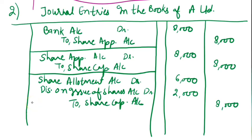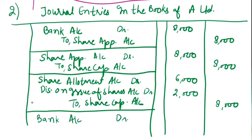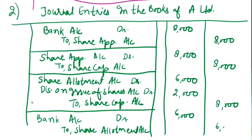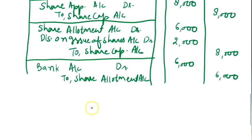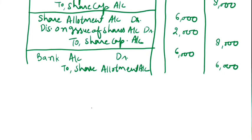We will now receive the allotment money. Bank Account debit to Share Allotment Account — rupees 6,000 received.